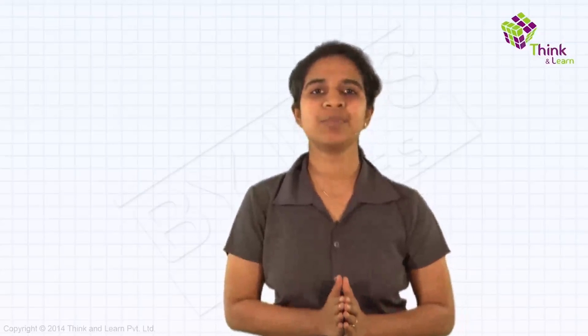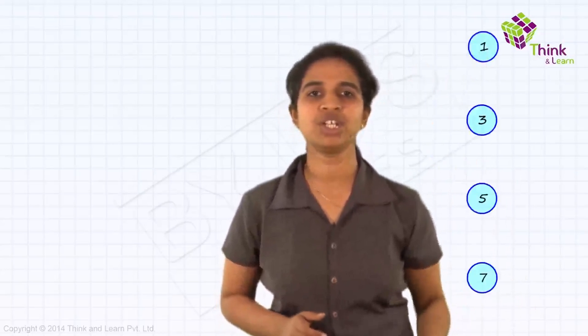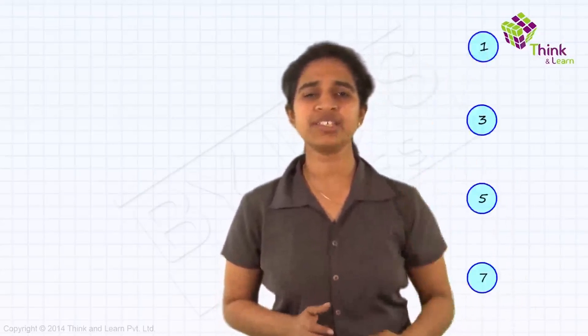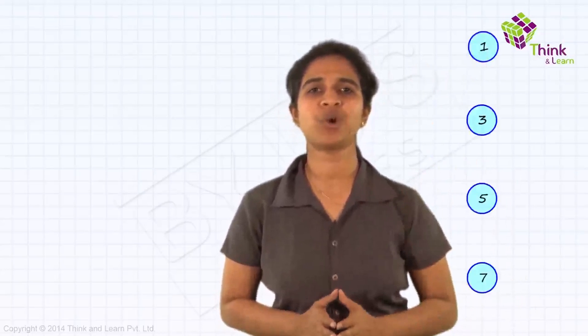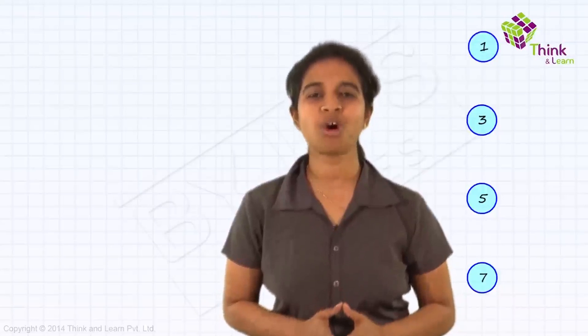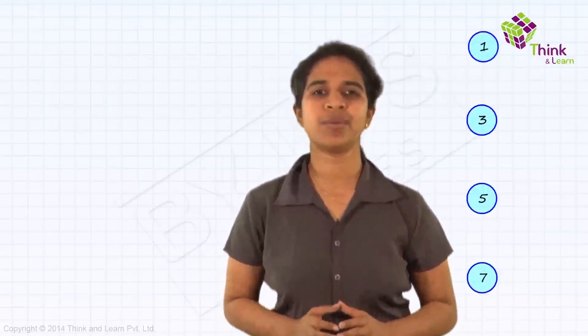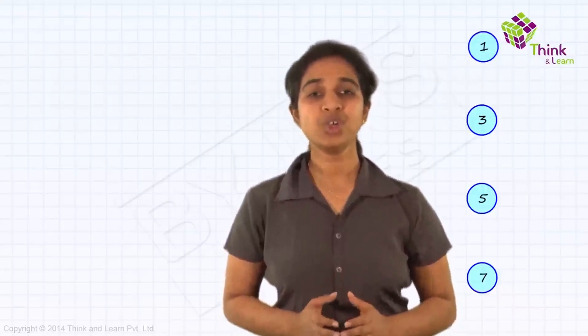Let's look at a very simple number pattern. Let's say 1, 3, 5, 7. What are these? These are nothing but odd numbers.